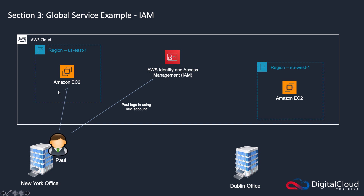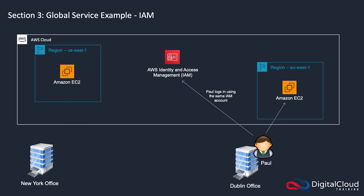Now if Paul were transferred to the Dublin office, he would log in from the Dublin office but he would still be connecting using the very same AWS account. There's only one IAM account for Paul and he can administer the resources in EU West 1.